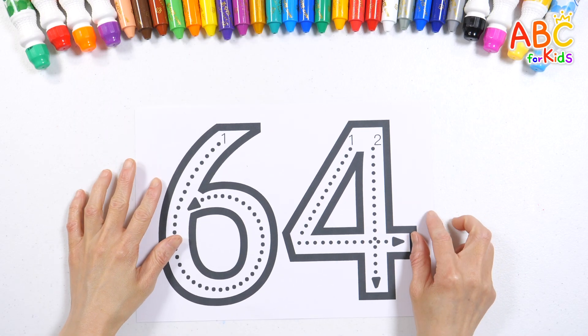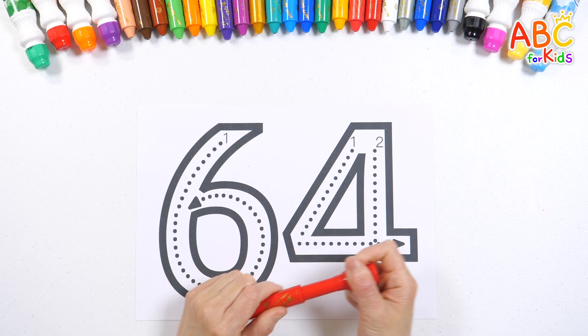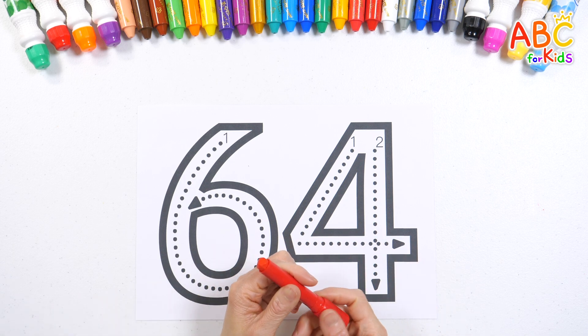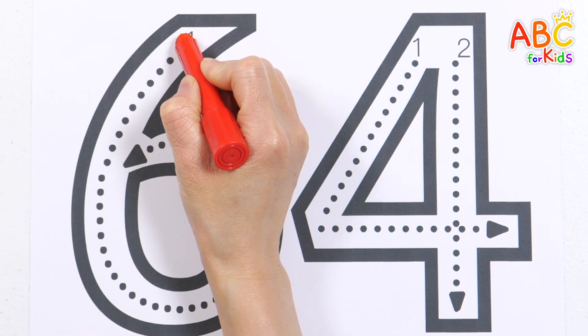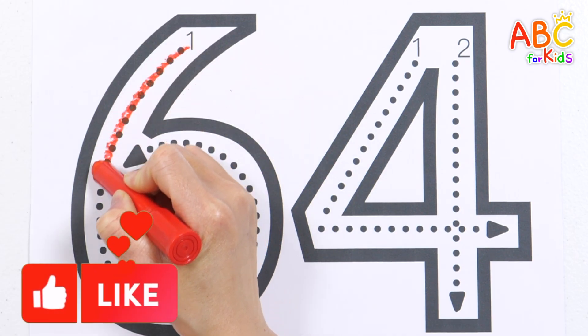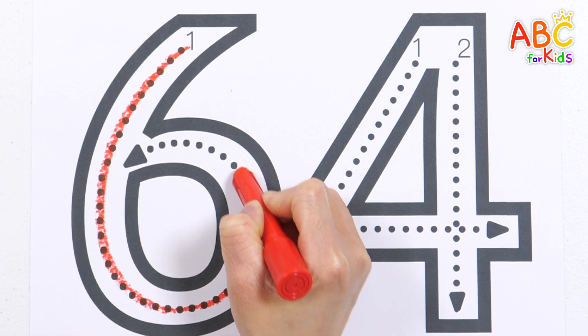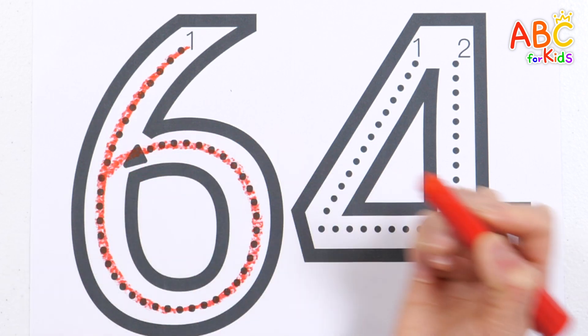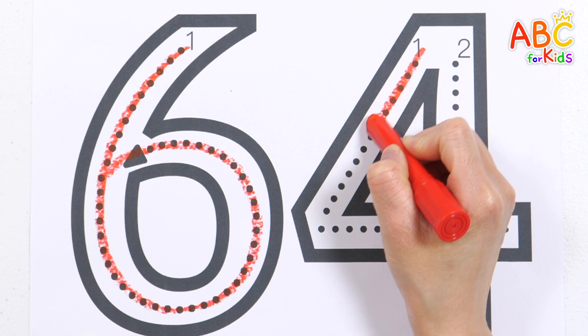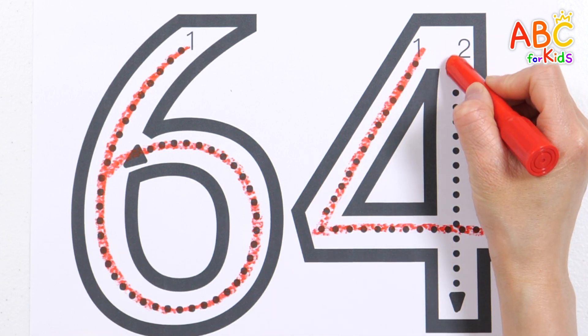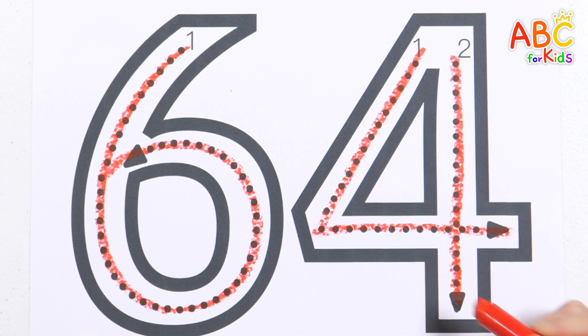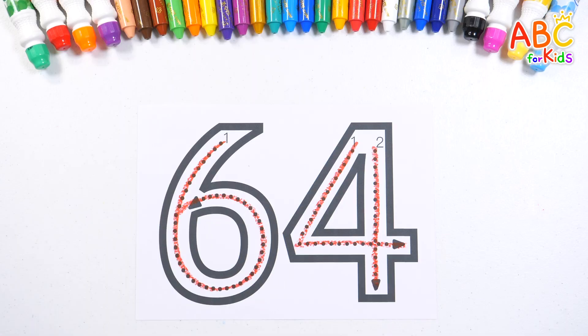Let's learn how to write the number 64. How? Let's write the numbers slowly in the direction of the arrows in numerical order. I is for igloo, cold and loud. F is for fish swimming in a crowd. 64! Very good!